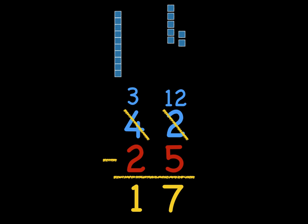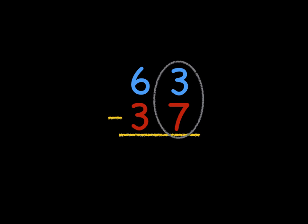Alright, so let's see if we can do another problem like this without the drawing. Let's do, for example, sixty-three minus thirty-seven. First thing we do is look at our ones. Can we do three minus seven? No, we can't. So we need to get more ones from our tens.